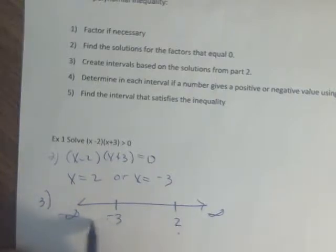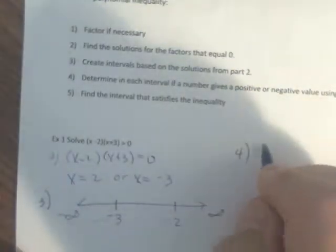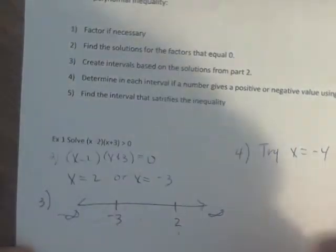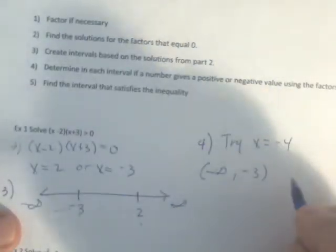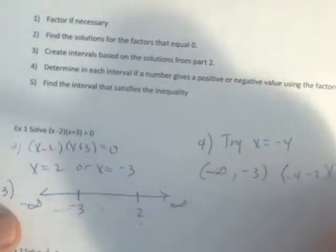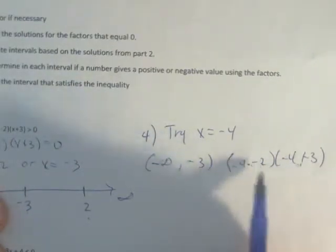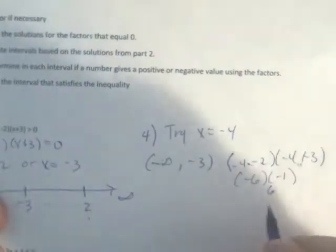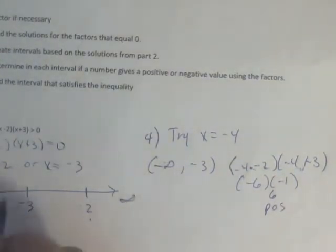We want to find points that are smaller than the smallest, in between the two solutions, and greater than the largest. In step four, I'm going to try x equals negative 4 — that's in the interval from negative infinity to negative 3. So I substitute: negative 4 minus 2 times negative 4 plus 3. That's negative 6 times negative 1, which is 6. So that is positive. Then I'll try a number in the middle interval — the easiest number would be 0, which is in the interval negative 3 to 2.